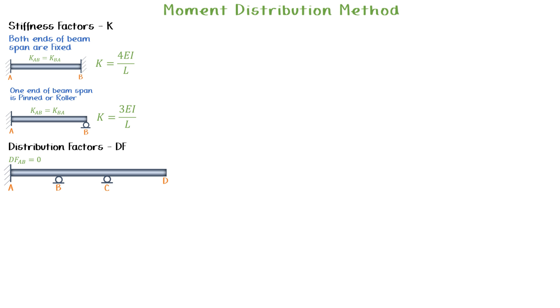Node D is an overhang and it will not take or distribute any moment. Therefore, distribution factor from C to D is zero.